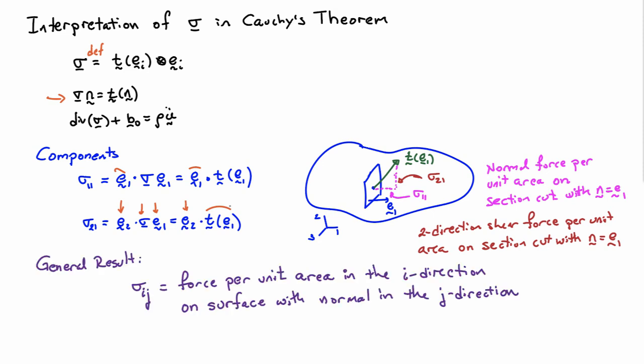The general result is that any component sigma ij is equal to the force per unit area in the i direction on the surface with normal in the j direction.